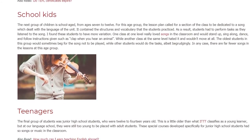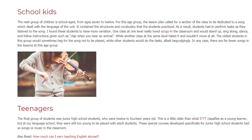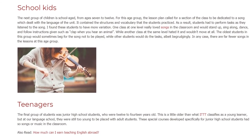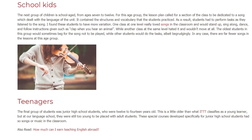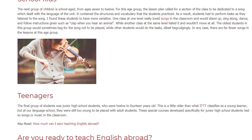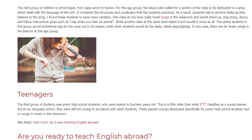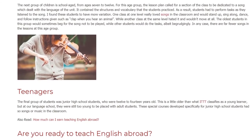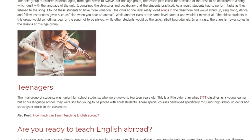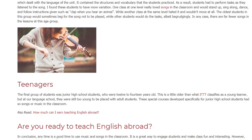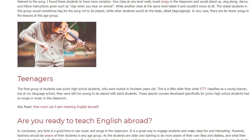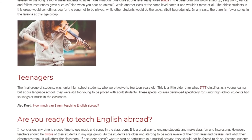The final group of students was junior high school students, who were 12 to 14 years old. This is a little older than what IDTT classifies as a young learner, but at our language school, they were still too young to be placed with adult students. These special courses developed specifically for junior high school students had no songs or music in the classroom.